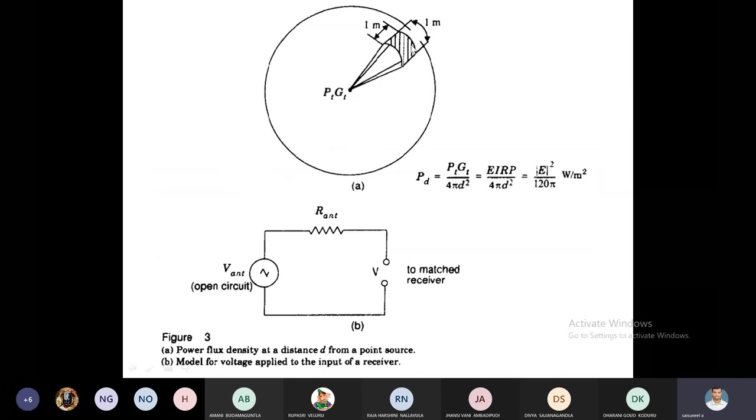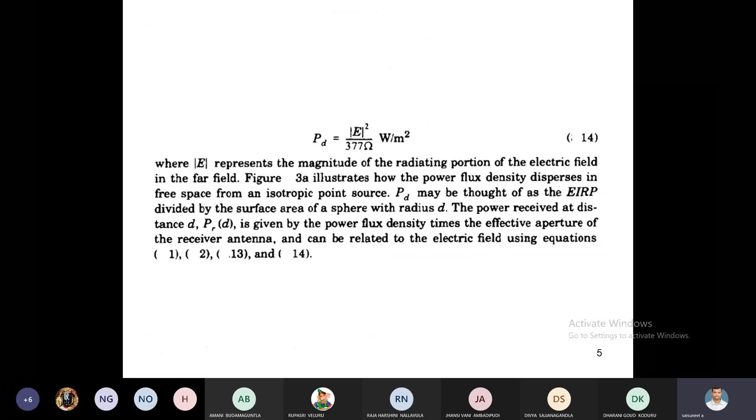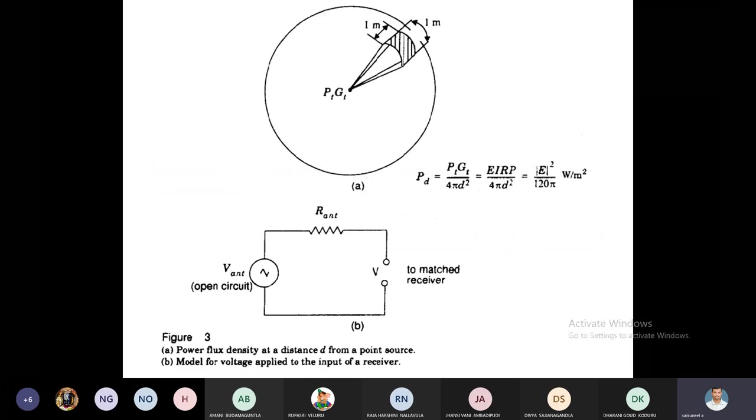Power flux density is the distance of D. Nothing but this is the transmitting antenna. So if we assume that this is the receiving antenna portion, the distance between transmitting and receiver is D. Here the transmitting antenna power and gain is pt gt, multiplication which is equal to EIRP. Here, the power received at the distance is D, and pr is given by power flux density times effective aperture of the receiving antenna.